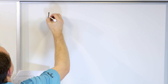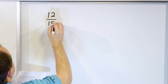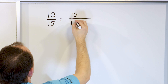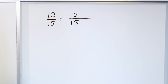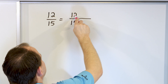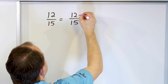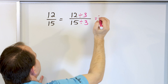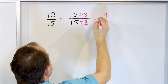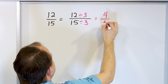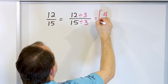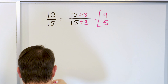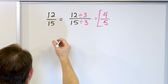Let's take a look at twelve-fifteenths. Let's simplify that. Rewrite the fraction, put twelve and fifteenths, draw your fraction bar. I know I can divide by three and by three. Twelve divided by three is four, because four times three is twelve. Fifteen divided by three is five, because five times three is fifteen. So the answer is four-fifths. I can't simplify this further because I can't divide top and bottom by anything to make it simpler.